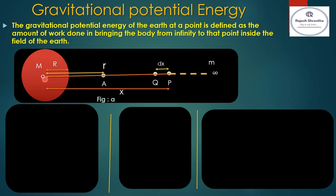Point A is at a distance r from the center of the Earth. When the body reaches point P, the gravitational force of attraction between the Earth and the body can be written as F = GMm/x², where G is the universal gravitational constant, M is the mass of the Earth, m is the mass of the body, and x is the distance between the body and the Earth at point P.